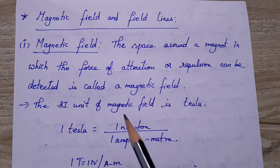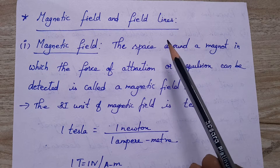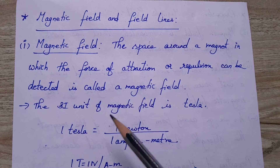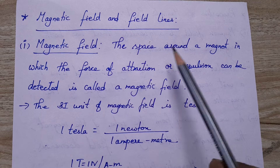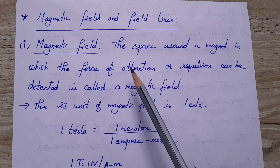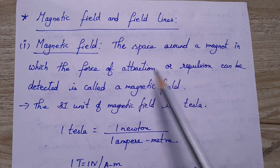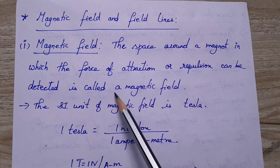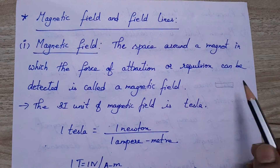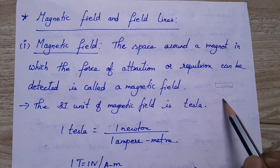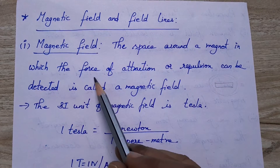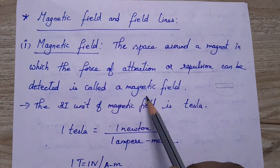So next one is magnetic field and magnetic field lines. What is magnetic field? There is some attraction force around the magnet — that is called magnetic field. The space around a magnet in which the force of attraction or repulsion can be detected is called magnetic field.